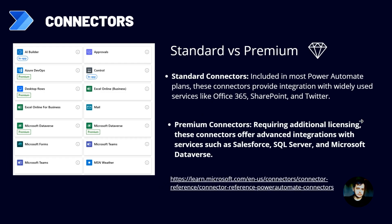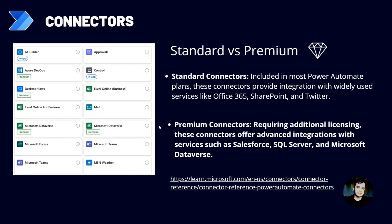Now, there is one differentiation between the connectors: we have standard and premium connectors. As you can see here in the screenshot, some are marked as premium and some are not. The standard connectors are already included in most Power Automate plans. For example, if you have a Microsoft 365 account with access to Power Automate, you can use the standard connectors without any additional costs. But there are premium connectors that require more licensing — for example, connecting to Salesforce, SQL Server, or Microsoft Dataverse. Usually databases require this premium plan, and you need to pay more to use them.